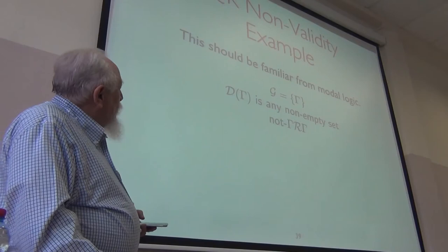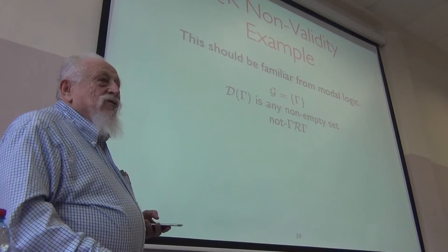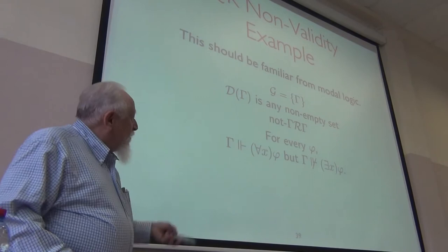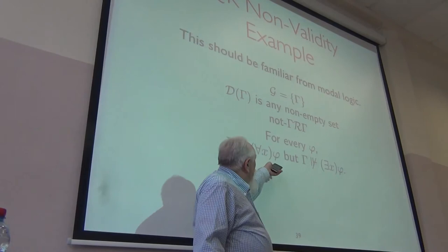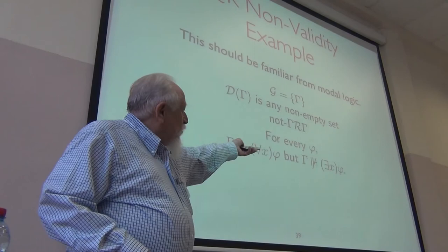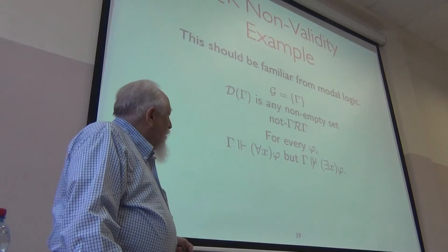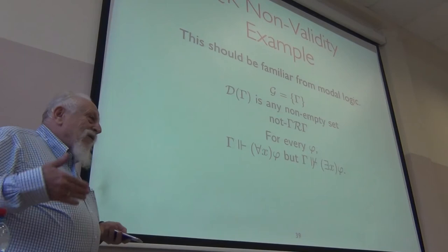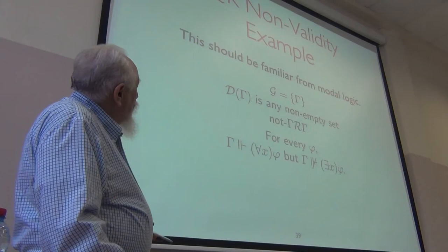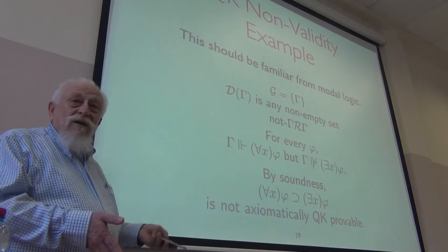Here's a very simple example. Take a one-world model with nothing accessible to it — not even accessible to itself. Then at that world, for-all x phi is true, but the existential is not. Why is for-all x phi true? Because there are no accessible worlds, so there's no accessible world where an instance fails — the universal quantification is vacuously true. But to show you have the existential, you'd need an accessible world and an instance that held. In the modal case, this is essentially the same way you show box doesn't imply diamond in K. So for-all x phi implies exists x phi is not provable in QK.